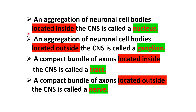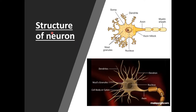Before discussing the structure of the neuron, we should know about the location terminology. An aggregation of neuronal cell bodies located inside the central nervous system is known as a nucleus, and outside the CNS it is called a ganglion. A compact bundle of axons inside the CNS is known as a tract, and outside the CNS it is known as a nerve.